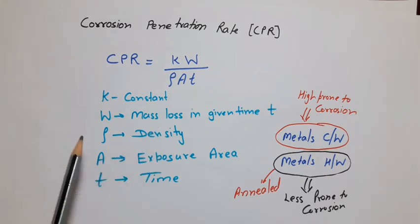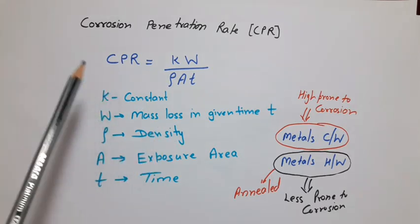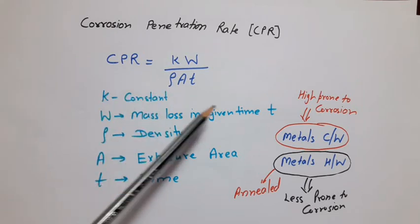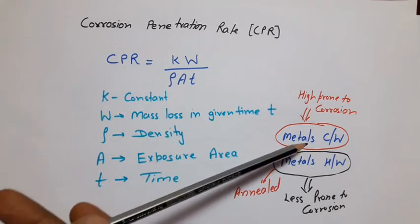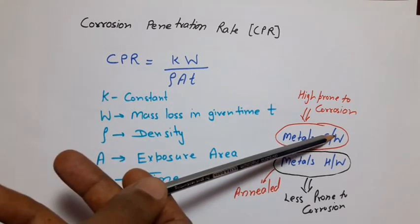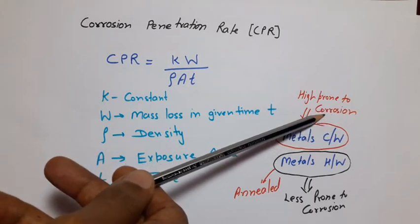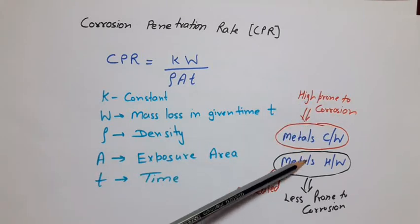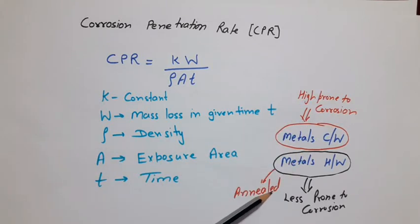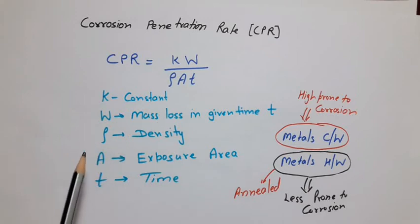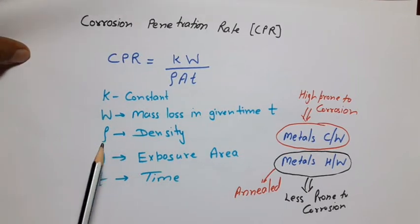W/t is the loss of mass due to corrosion per unit time. If loss of mass in a unit time is more, then corrosion penetration rate will be more. We should also remember that metals which have undergone cold working are more prone to corrosion instead of those metals which are annealed or hot worked. Now we see some of the methods for the prevention of corrosion.